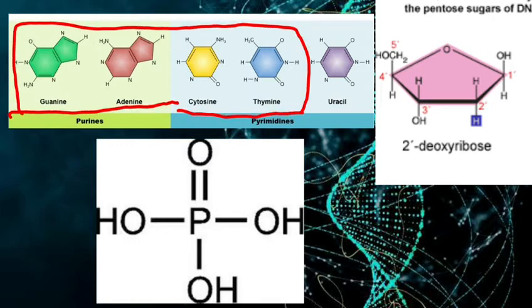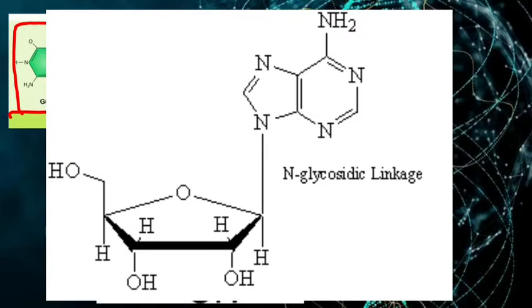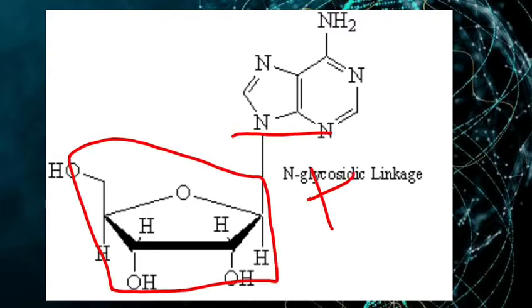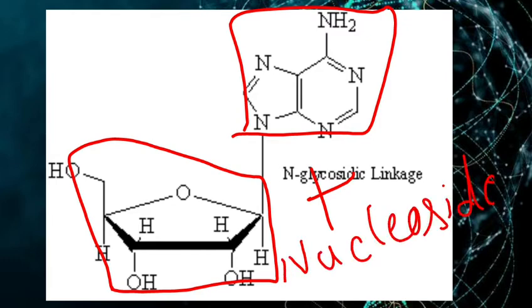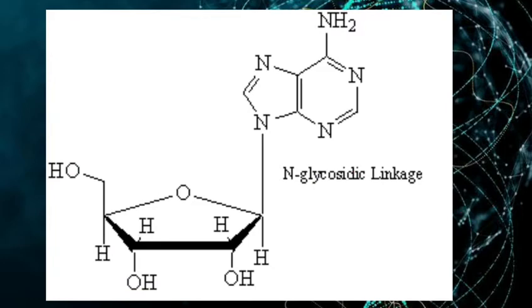So firstly, pentose sugar is added with the nitrogen base and this forms nucleoside. The names of these nucleosides depend on the nitrogen base. In nucleoside formation, pentose sugar is two-deoxyribose type, but which nitrogen base is present determines the type of nucleoside. Nitrogen base attaches to sugar at 1' carbon and the linkage formed between them is called N-glycosidic linkage. N means nitrogen and glyco means glucose, as the pentose sugar is there.